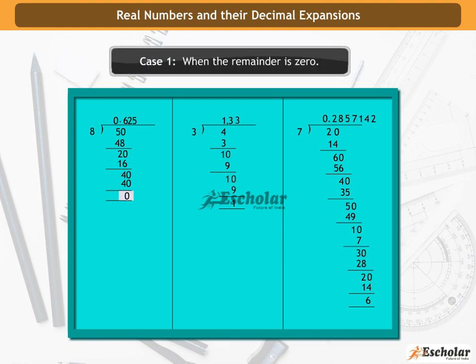Case 1: when the remainder is 0. In this case, the remainder is 0 and the decimal expansion terminates after a finite number of digits after the decimal point. In the decimal expansion of 5 by 8, we can see that the remainder becomes 0 and the decimal number obtained is 0.625.